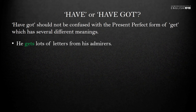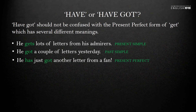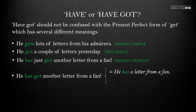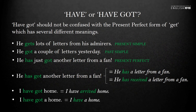Let's compare these examples. 'He gets lots of letters from his admirers' — a typical present situation. 'He got a couple of letters yesterday' — a past situation. 'He has just got another letter from a fan' — present perfect. If we drop the word 'just,' a sentence where get is used in the present perfect and a sentence with have got in the present simple will look the same. So 'he has gotten another letter from a fan' may mean either he has a letter now, or he has received a letter. Also compare: 'I have got home' means I have arrived home, while 'I have got a home' means I have a home — this can create ambiguity.